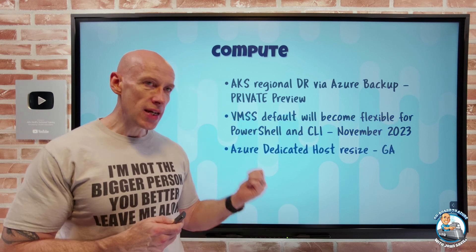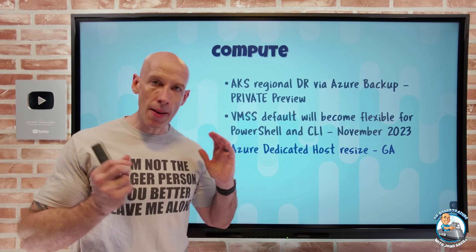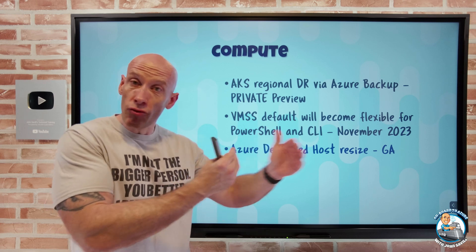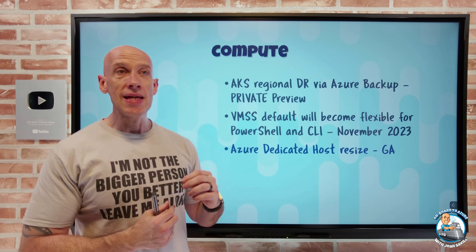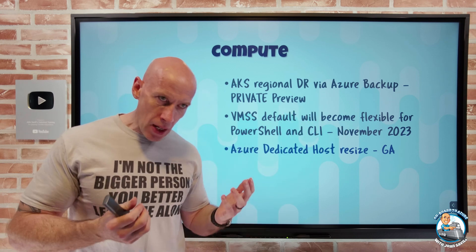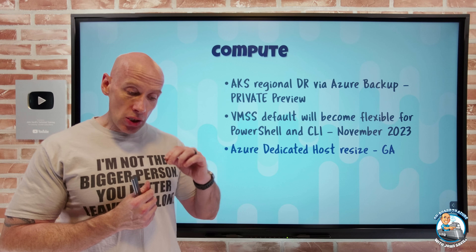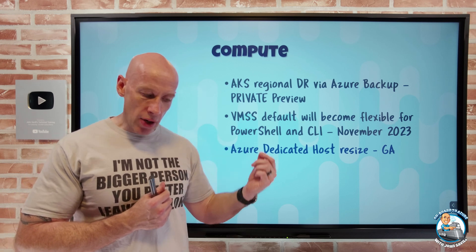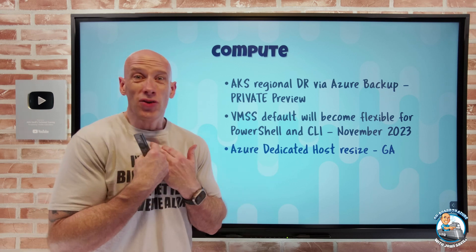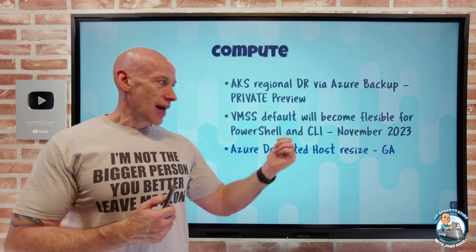Azure Dedicated Host resize has gone GA. There are different SKUs of Dedicated Host where you buy out the entire capacity of a host of a certain SKU, and can create VMs of the same SKU family of different sizes within it. This now lets you easily resize to something in the same VM family — for example, from a DSV3 Type 1 to a DSV3 Type 4. It will create the new host, migrate all existing VMs, and delete the old host automatically. A very simple interaction with no manual operations required.